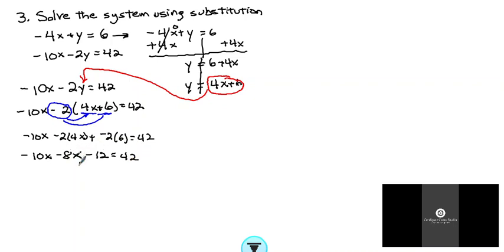Here I'm going to combine my like terms. So I have negative 18x minus 12 equals 42.